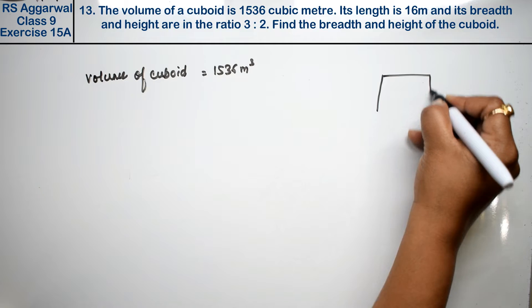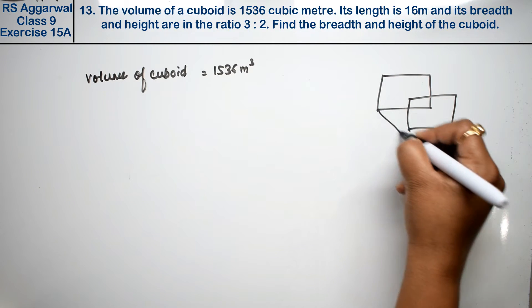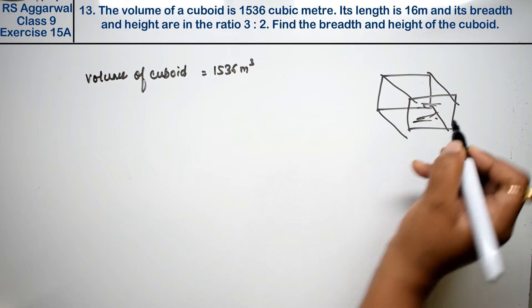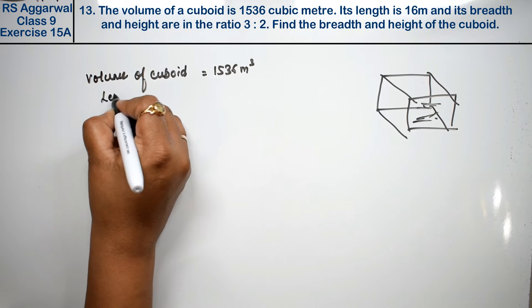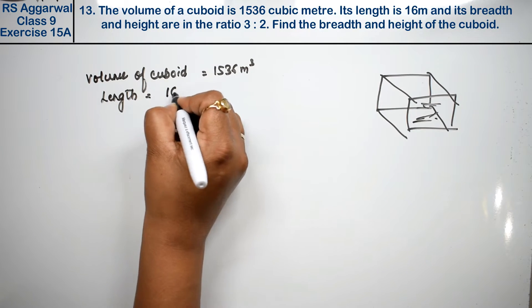One box is a cuboid which has been given the volume. Length is equal to 16 meters.